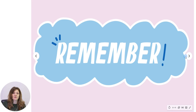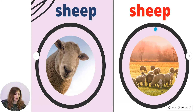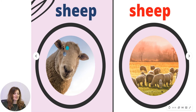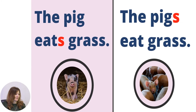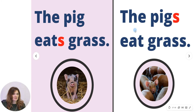Today we have to remember one more rule. There are some nouns in English that have the same form in singular and in plural. Look: one sheep, many sheep. This might sound unusual, but this is the rule — sheep for one and sheep for many. Let's see some examples. Here is a sentence in singular: the pig eats grass. We know that for the third person singular we use the verb with S. But when we turn this into plural: the pigs eat grass.